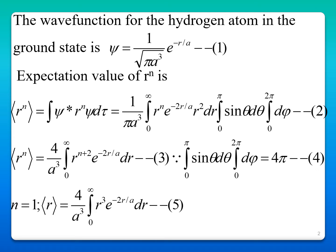The wave function for the hydrogen atom in the ground state is psi equal to 1 by square root of pi a³, e power minus r by a. Generally, for the expectation value of r power n, it is the integral psi star r power n psi d tau. Substituting the value for psi and psi star, d tau in terms of dr, d theta, and d phi, it is 1 by pi a³, integral from 0 to infinity r power n e power minus 2r by a, r squared dr, integral from 0 to pi sin theta d theta, integral from 0 to 2pi d phi.